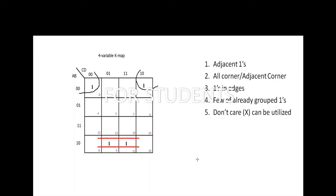Now these ones are at the edges. It is not possible to form a quad here because the remaining two corners do not have ones, so we can make only a pair, not a quad. This is called adjacent corner — we should not go for opposite corner, only adjacent corner. This is the second rule.